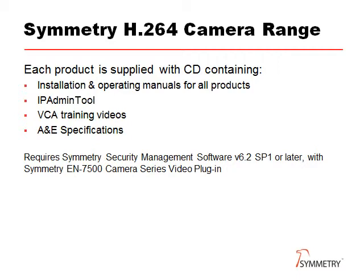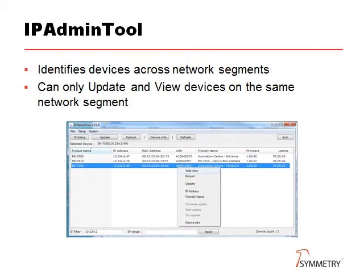Each camera is supplied with a CD with all the information you'll need, as well as some innovative training videos on how to configure and use the analytics. This CD includes a utility called IP Admin Tool, which searches for all Symmetry cameras on all network segments and provides information such as IP address, MAC address and friendly name. Although it's possible to identify cameras and change their IP address, it is not possible to view the camera's web page across network segments without first changing the IP address. Where there are a large number of cameras installed, it is possible to display specific segments of the network to scan, in this case 10.234.0.